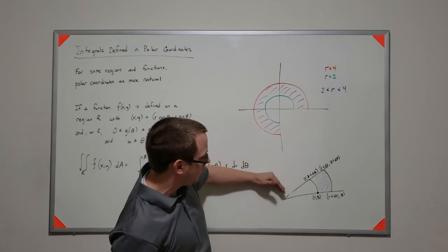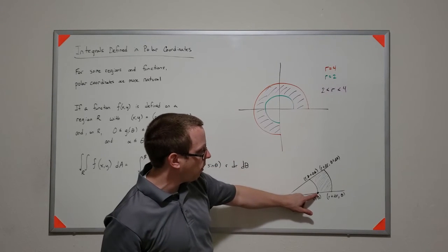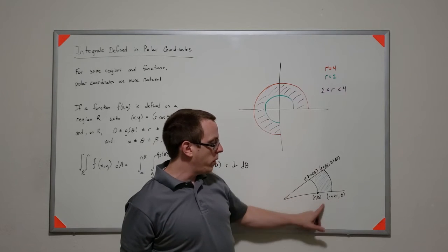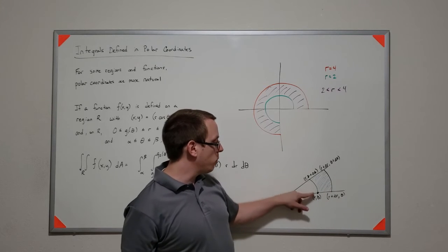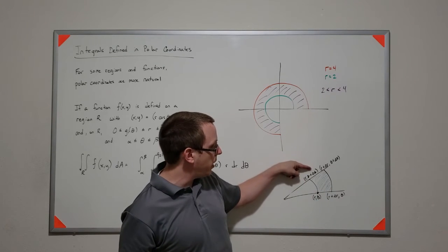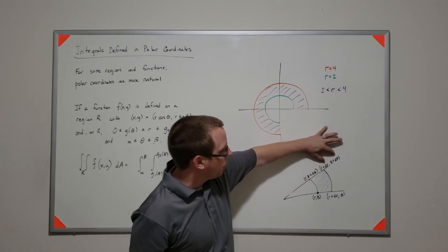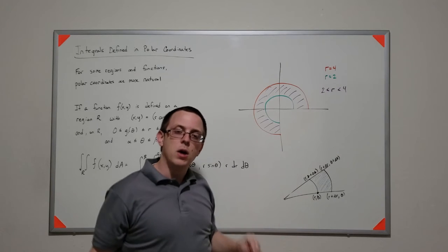So if you take a look at this right here, I have some sort of point r theta, and then this point goes a little further in terms of r, so it goes Δr, and this one goes a little bit up, so it goes Δθ, and then this one goes over Δr and Δθ.